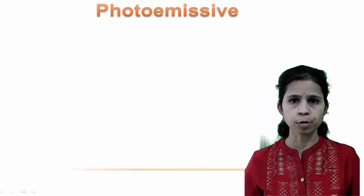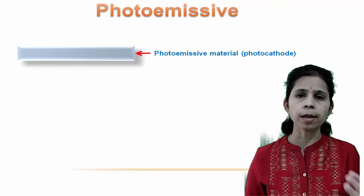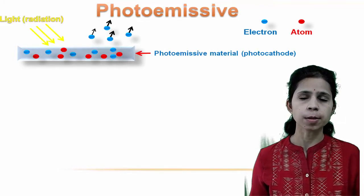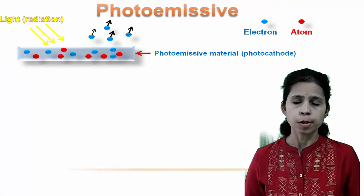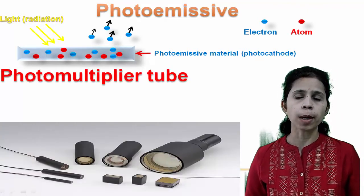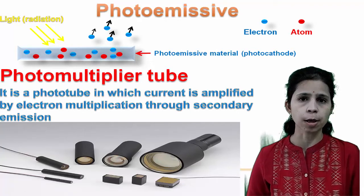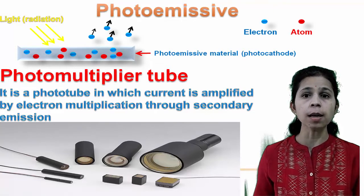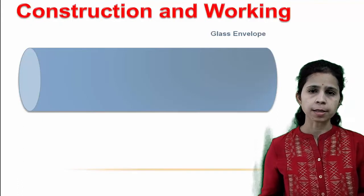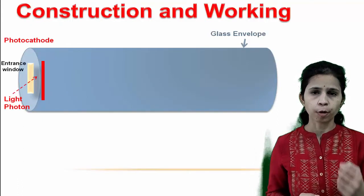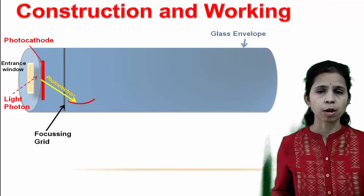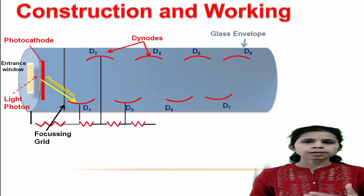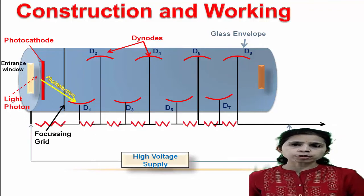In photoemissive transducers, when radiation falls on the cathode (photocathode), photoelectrons are emitted. The photomultiplier tube is a photoemissive photoelectric transducer — a phototube in which current is amplified by electron multiplication through secondary emission. It consists of an evacuated glass envelope containing a photocathode and several anodes called dynodes maintained at increasing potential. When light enters the photomultiplier tube and falls on the photocathode, photoelectrons are emitted.